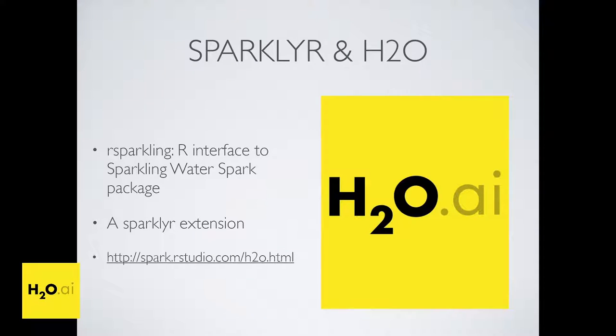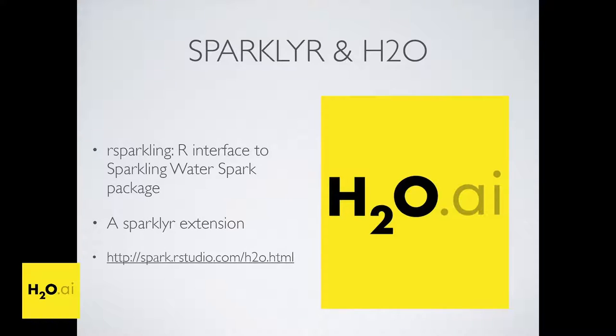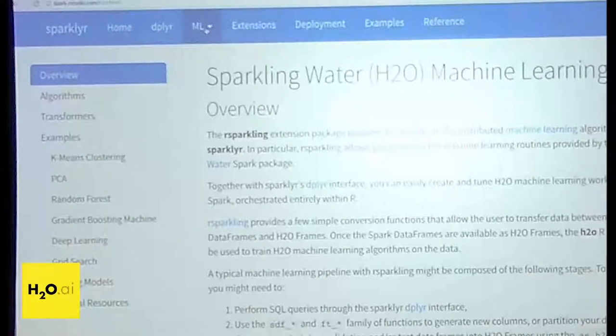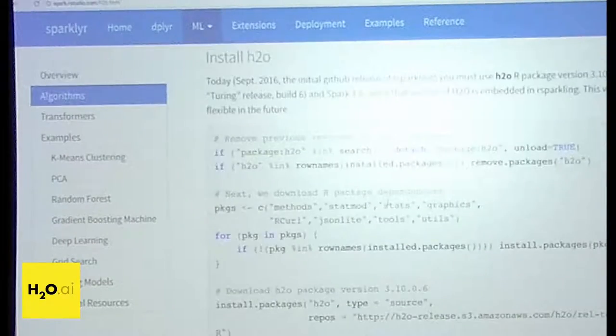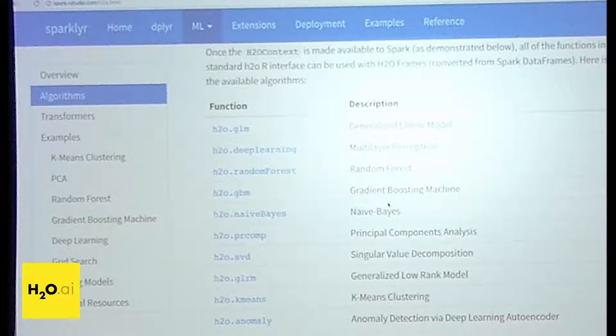One of the more exciting things, especially to this audience, is that the platform is extensible and partners are integrating their Spark work into sparklyr. H2O has done this and created a package called RSparkling, which is an R interface into sparkling water, their Spark library for H2O machine learning. This is available as a sparklyr extension, open source and available online. If you go to spark.rstudio.com and click the ML tab, you'll find the H2O link with steps to set up H2O with sparklyr. All of H2O's algorithms are then available to you through R on the Spark platform.